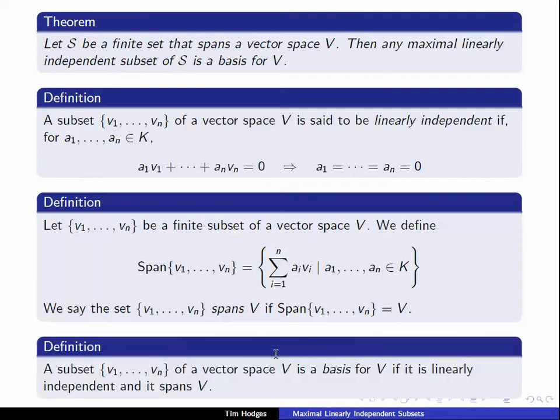Finally, a basis is a subset of a vector space that's both linearly independent and spans V. So this means that any element can be written uniquely as a linear combination of these V1 up to Vn.